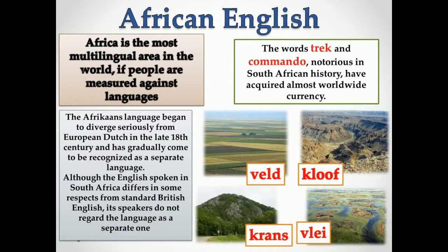Africa is the most multilingual area in the world. Upon a large number of indigenous languages rests a slowly changing superstructure of world languages: Arabic, English, French, and Portuguese. The problems of language are everywhere linked with political, social, economic, and educational factors. The Republic of South Africa, the oldest British settlement on the continent, resembles Canada in having two recognized European languages within its borders: English and Afrikaans, or Cape Dutch.